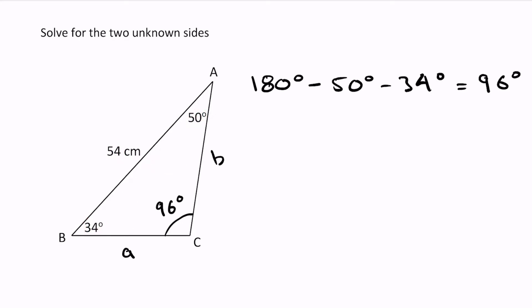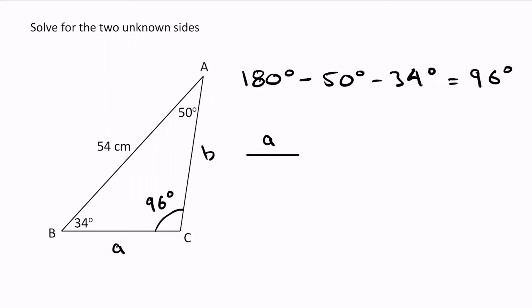Let's get that out of the way and we can set up our sine law. I'm going to solve for side a so I'm going to have a on the top over sine of the angle opposite side a, which is 50 degrees, and that's equal to what I know, which is 54 over the sine of 96 degrees.